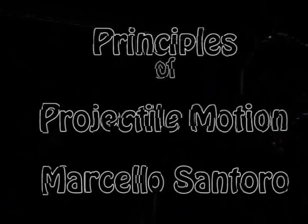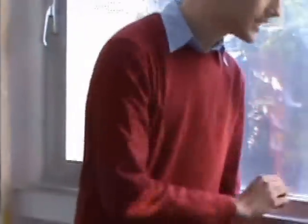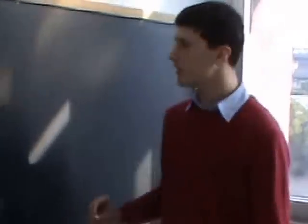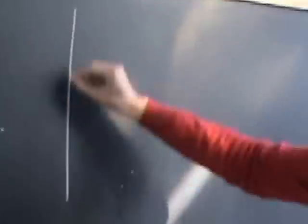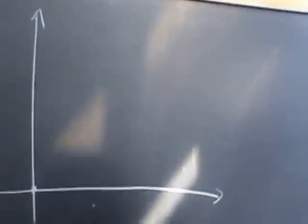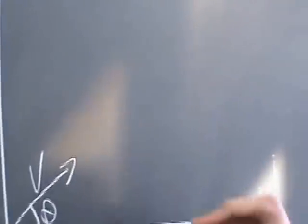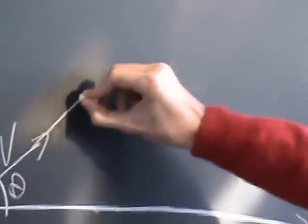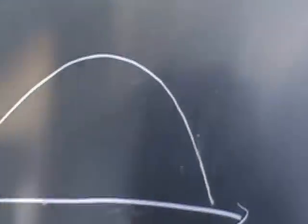I'm going to discuss about the principal points of projectile motion. A projectile is an object on which the only force is gravity. This is our frame of reference and this is our projectile. If we draw it at an initial velocity v at an angle eta to the horizontal, we can see that it follows this trajectory, that is, a parabola.